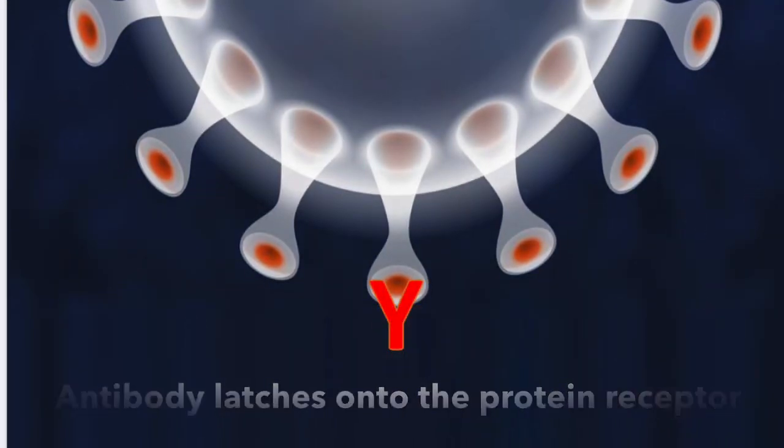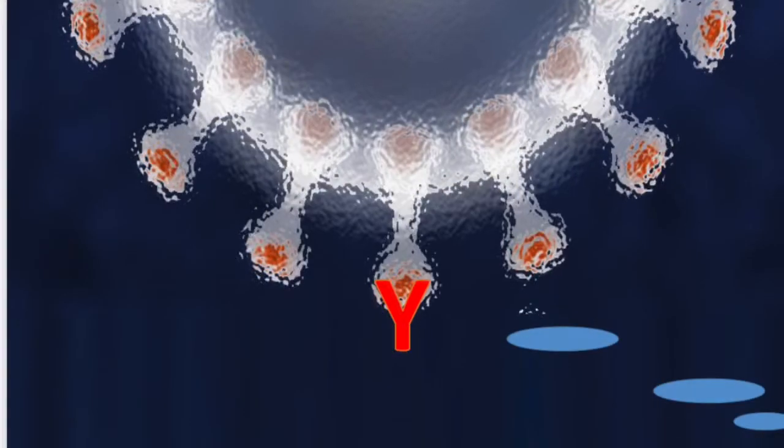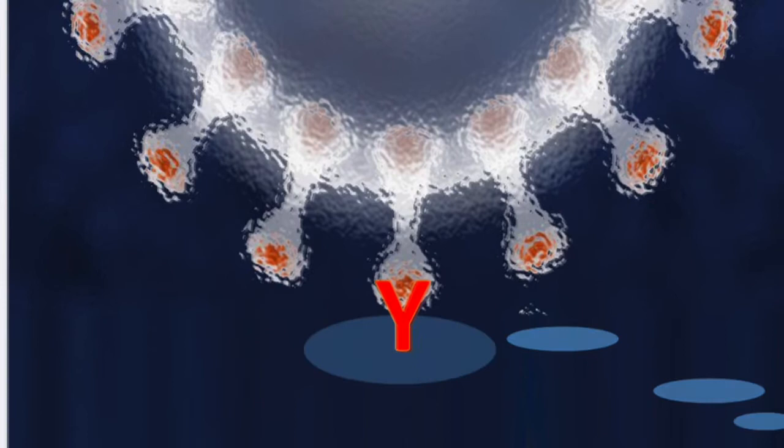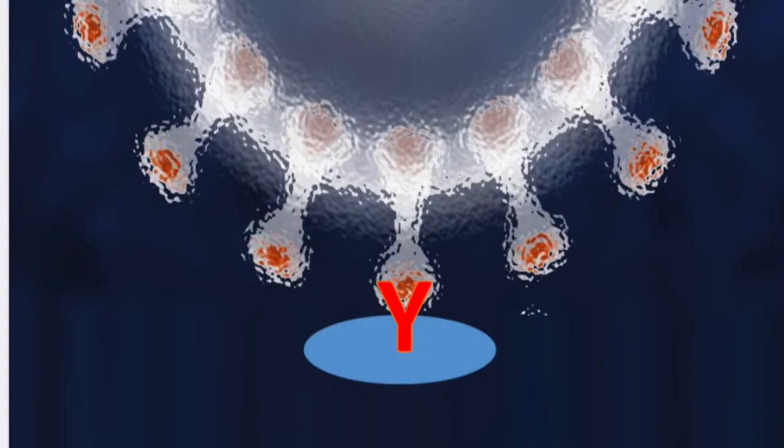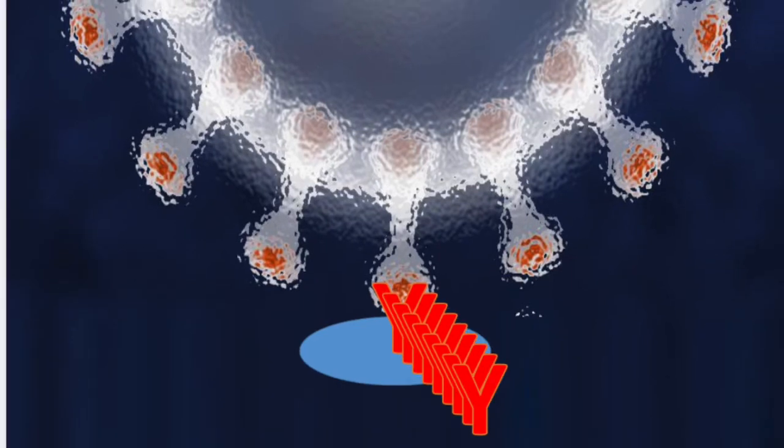it latches into the receptor of the bacteria or virus and kills it. These memory cells create copies of this antibody so that when this foreign body visits us again, it will be able to kill it in no time. Symptoms may slightly be felt or not at all.